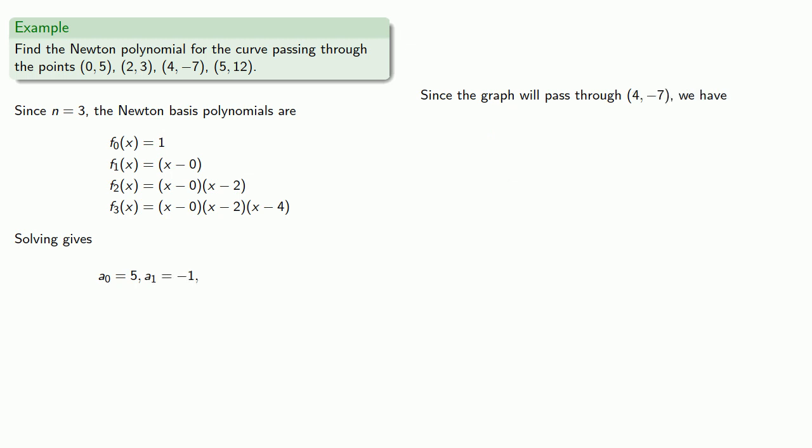Since the graph passes through (4, -7), if x is equal to 4, N(x) will be negative 7. And again, if x is equal to 4, this last term vanishes. And we'll get an equation where the only unknown is a2. So we solve.